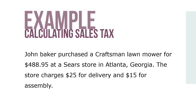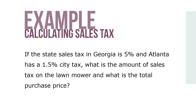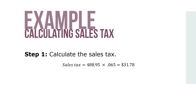Here's an example. John Baker purchased a Craftsman lawnmower for $488.95 at a Sears store in Atlanta, Georgia. The store charges $25 for delivery and $15 for assembly. If the state sales tax in Georgia is 5% and Atlanta has a 1.5% city tax, what is the amount of sales tax on the lawnmower and what is the total purchase price? Step 1: Calculate the sales tax, which is equal to $488.95 times 0.065, to give a total of $31.78 in sales tax.